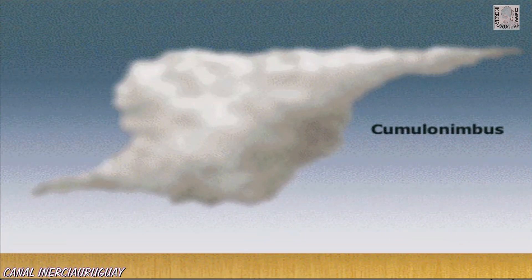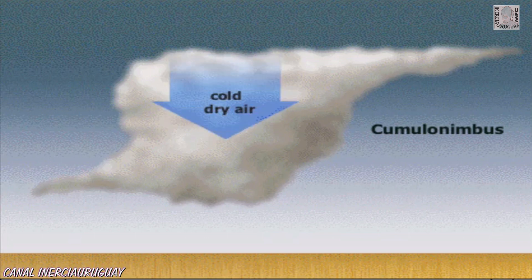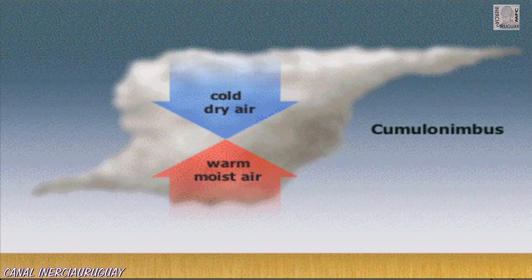Tornadoes form out of the bottom of cumulonimbus clouds, where cold, dry air meets warm, moist air. They're always associated with severe thunderstorms.